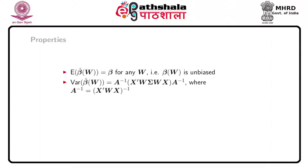Now, considering the variance of β̂(W): the computation is somewhat involved. Let A = (XᵀWX)⁻¹ and Y* = XᵀWY. Then Var(β̂(W)) = Var(AY*) = A Var(Y*) Aᵀ. Since Y* = XᵀWY, we have Var(Y*) = XᵀW Var(Y) (XᵀW)ᵀ. Plugging in these values gives the full form of Var(β̂(W)).